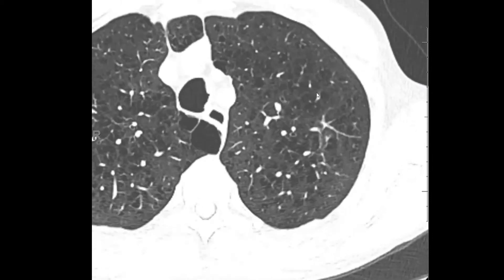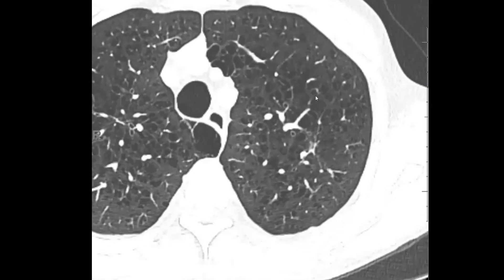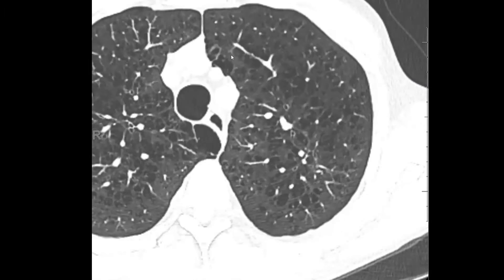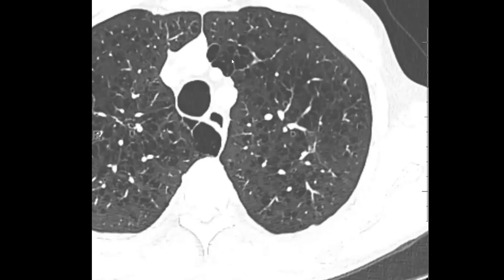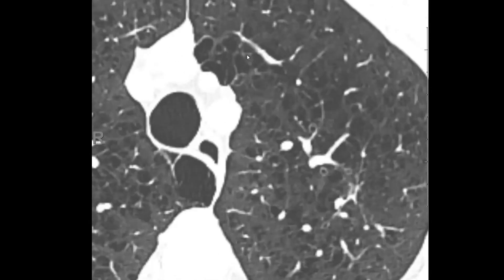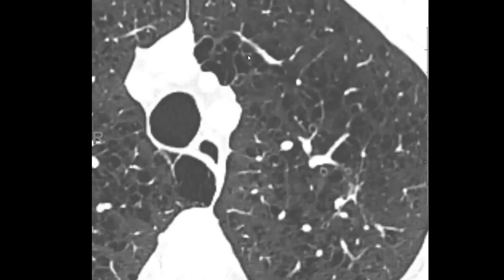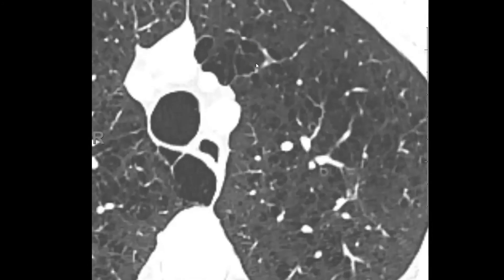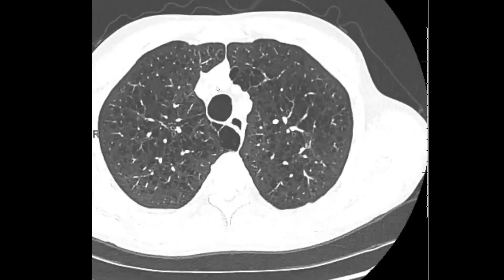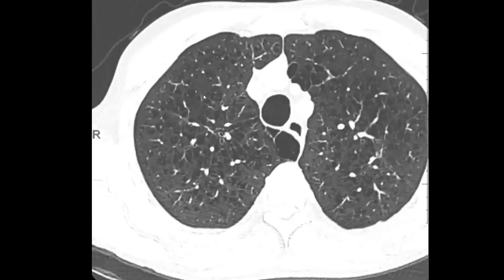These are examples of centrilobular emphysema. When the centrilobular emphysema coalesces, you start to see areas of confluent emphysema — for example, in the left upper lobe, where multiple lobules are diffusely involved with emphysema. Sometimes you get a little bit of dilation as well.